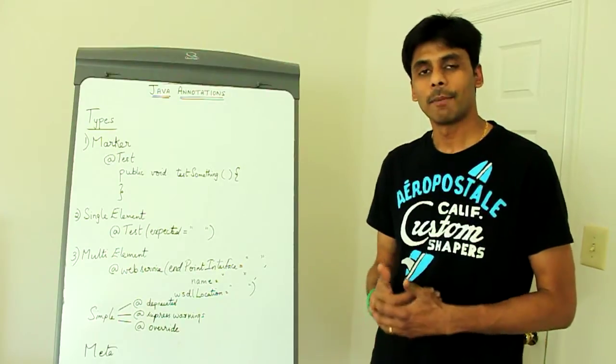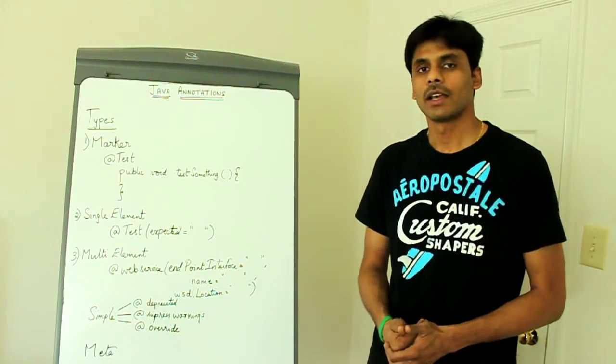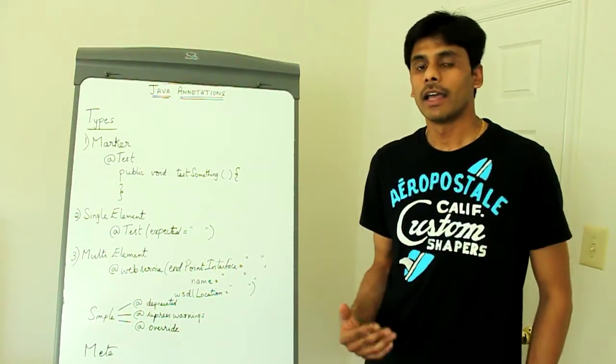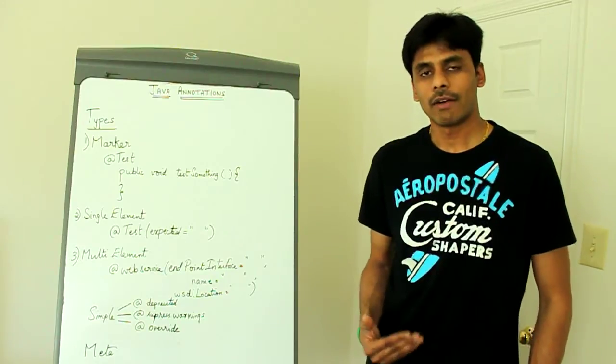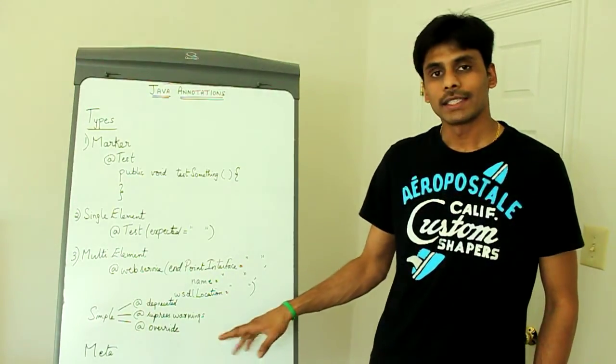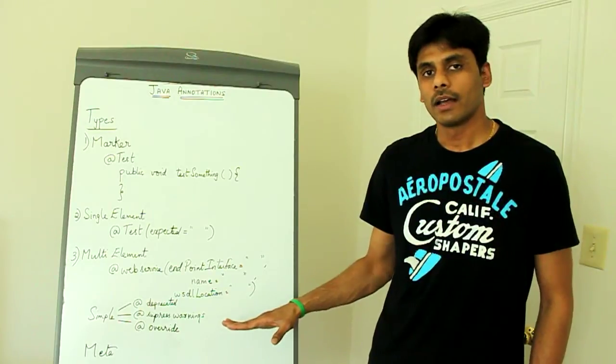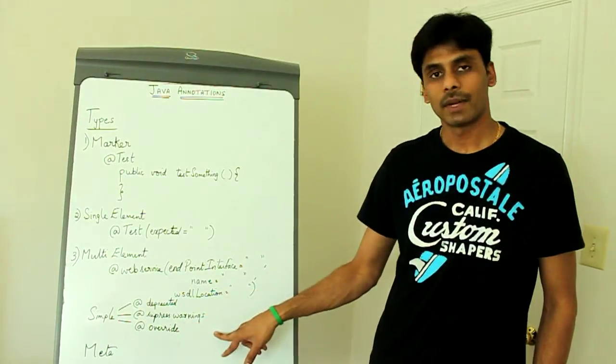So if you use a deprecated method or class or field from some other API within your Java class, you can suppress the warnings that are provided by the compiler during the compile time using the at suppressed warnings.